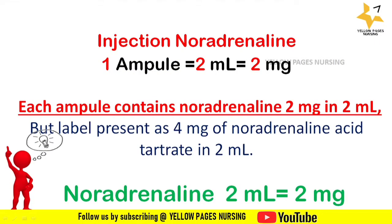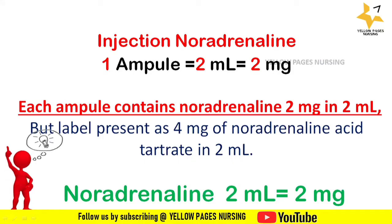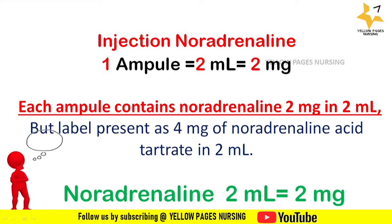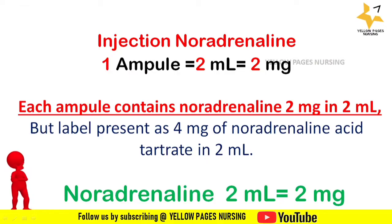Each ampoule contains noradrenaline 2 mg in 2 ml, but the label presents as 4 mg of noradrenaline acid tartrate in 2 ml — so do not be confused. Noradrenaline 2 ml equals 2 mg of strength.